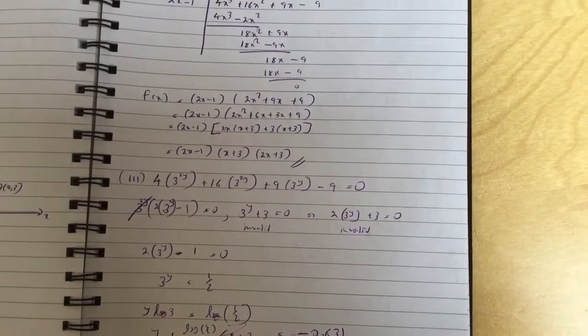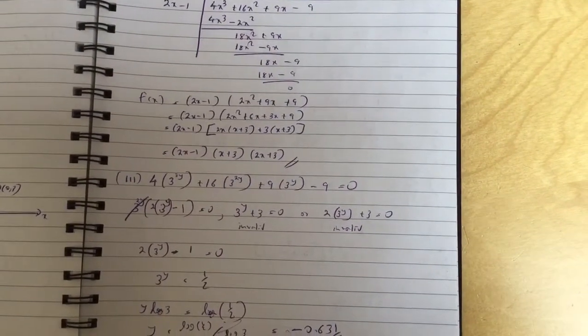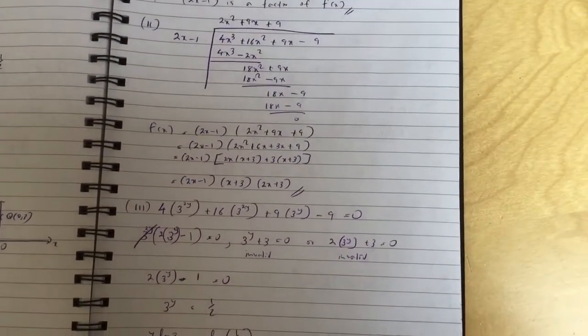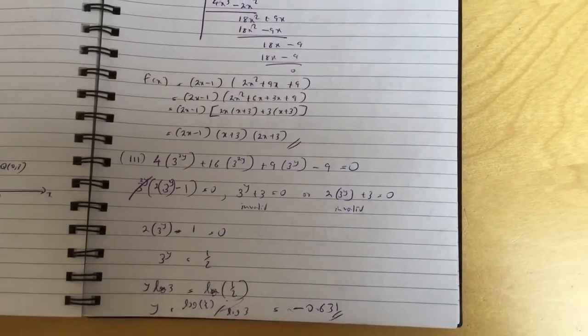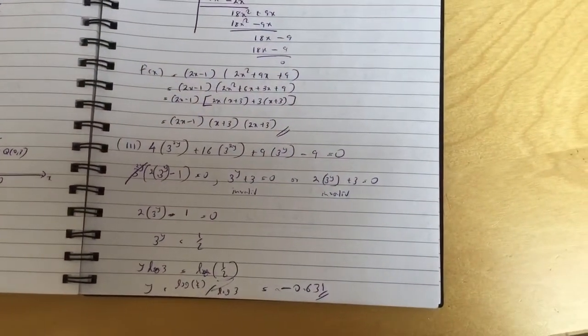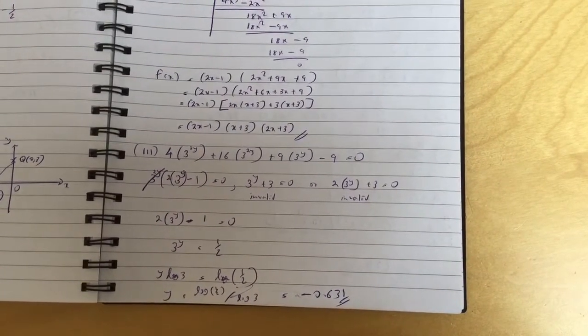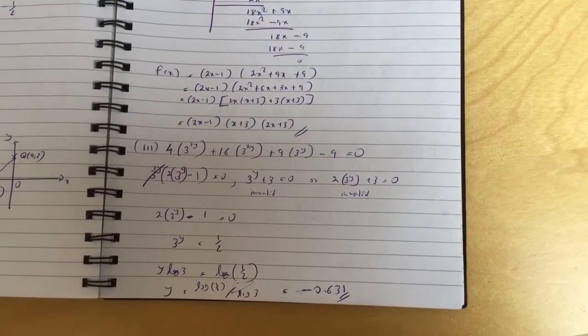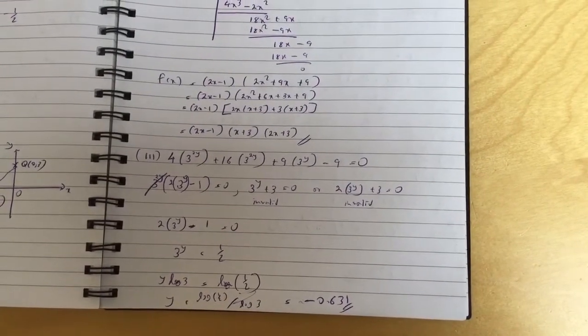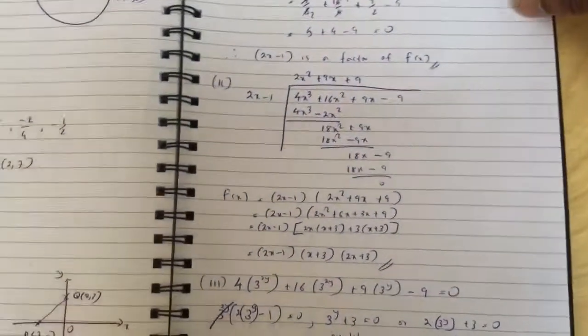And here, you just basically, this equation here is the same as before, instead of x it's just 3 to the y. So using the three factors, we get 2(3^y) - 1 = 0, because the other two factors don't give us an answer, they're invalid. So y is -0.631. That's question five.